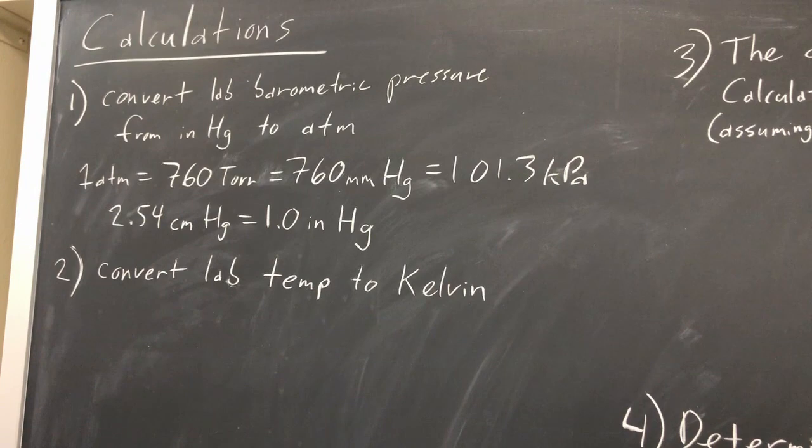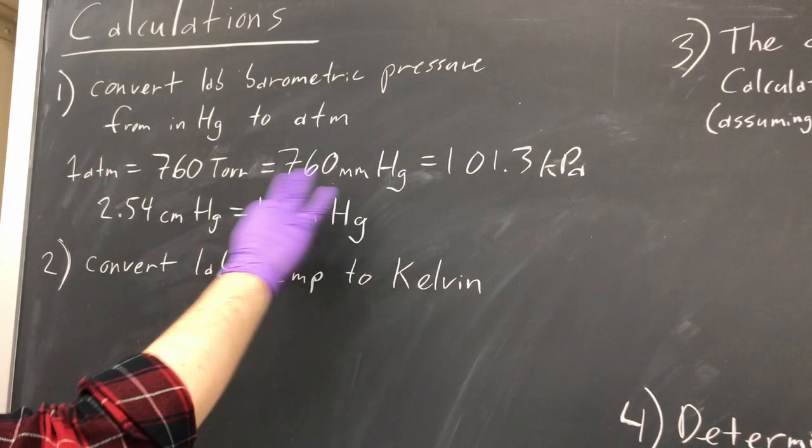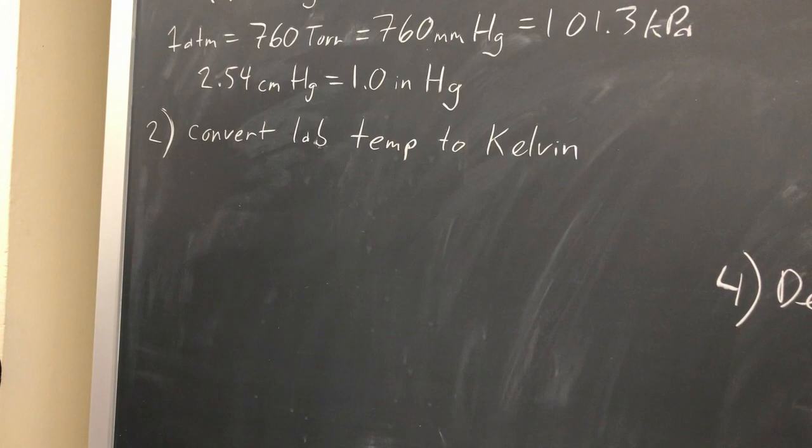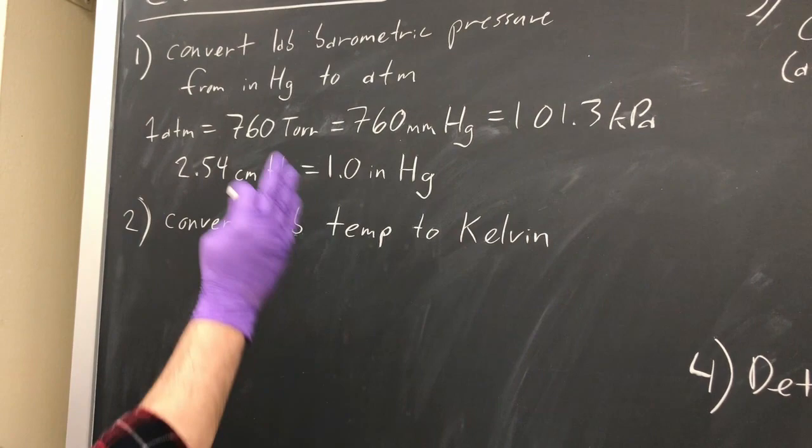So here are the calculations that you have to do for the molar volume of CO2 lab. First, you're going to convert lab barometric pressure from inches of mercury to atmospheres using these equations here, these relationships. And then you'll convert lab temperature from Celsius to Kelvin. And we've given you both the pressure in inches of mercury and temperature in Celsius, and you just have to easily convert that into atmospheres and Kelvin.